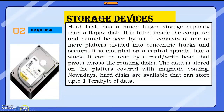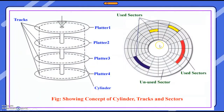Inside this hard disk there are two or more platters. The platters are divided into tracks and also divided into sectors. It is mounted on a central spindle. I will show you the picture — then it becomes more clear. This is the inside portion of the hard disk. Under this there are platter one, platter two, platter three, platter four — so many platters are there, mounted on a cylindrical spindle. Each platter is further subdivided into tracks.